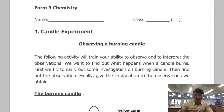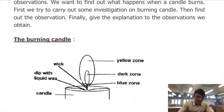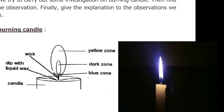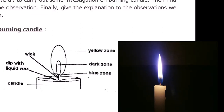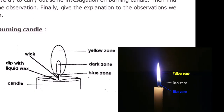Before we start looking at the procedures, let's have a closer look at the burning candle. You can also refer to the diagram in the first page of your lab menu. Different areas of a candle flame show different colors. At the top, we have the yellow zone. Right above the wick, we have the dark zone. Right below the wick, we have the blue zone.